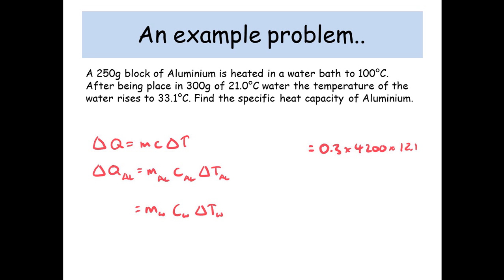Why 12.1? Well, the temperature went from 21 degrees to 33.1 degrees, which is a difference of 12.1. So the energy gained by the water is 15,246 joules.